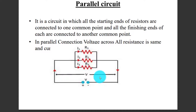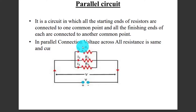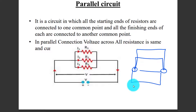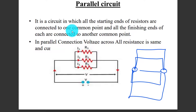In a parallel circuit, all the starting ends of resistances are connected to one common point and all the finishing ends are connected to another common point — that is, end-to-end connection with common points. This is called a parallel connection.